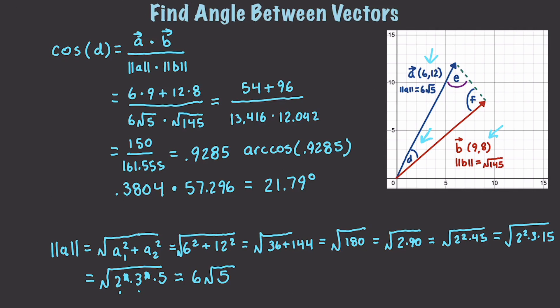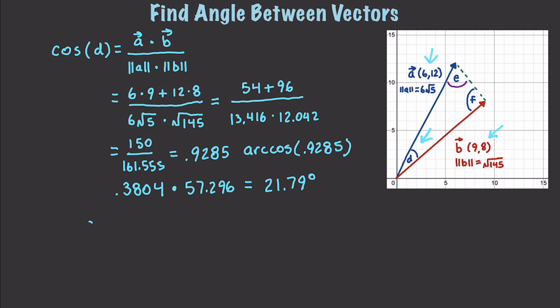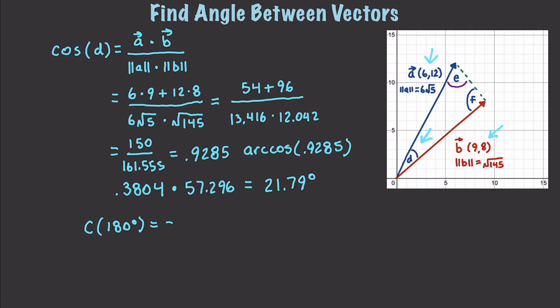So we learned a whole bunch of things in that example. Some important points: if cosine of 0 degrees equals 1, then vectors A and B are pointing in the same direction. If cosine of 90 degrees equals 0, that means those vectors are pointing in opposite directions. And if cosine of 180 degrees equals negative 1, that means those vectors are perpendicular.